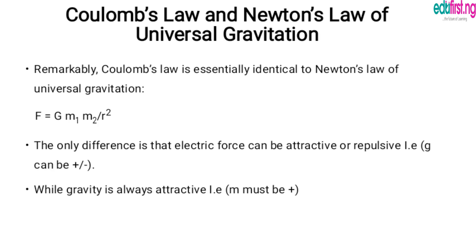Remarkably, if you look at Coulomb's law, we realize it is essentially identical to Newton's law of universal gravitation, which is F equals G times m1 multiplied by m2 divided by the square of their distance. The only difference is that the electric force can be attractive or repulsive. When comparing Coulomb's law and Newton's law of universal gravitation, we realize that the electric force can be either attractive or repulsive.